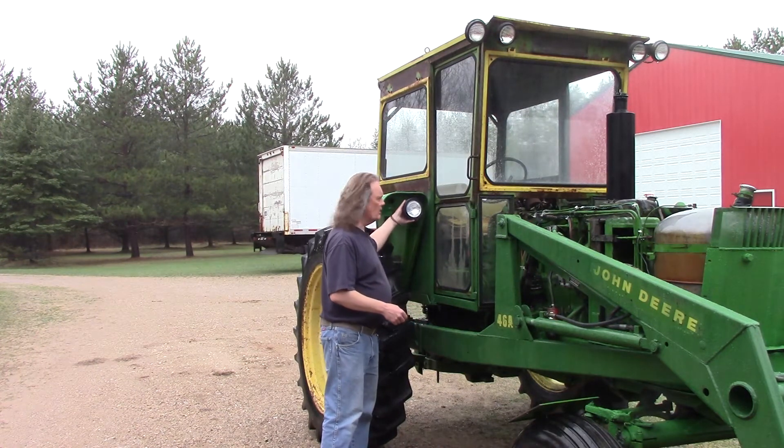The next issue is to get the lighting working on the tractor, and this tractor has quite a few lights. We're going to be installing some new lamps to mount into the fenders, the standard lights that go on the tractor, four of those. It also has four lamps above the cab, some lamps in the back side of the cab, and some marker lights.